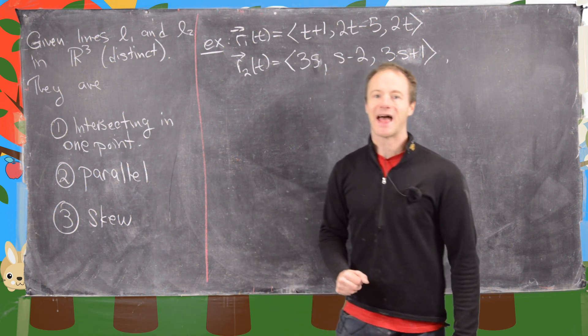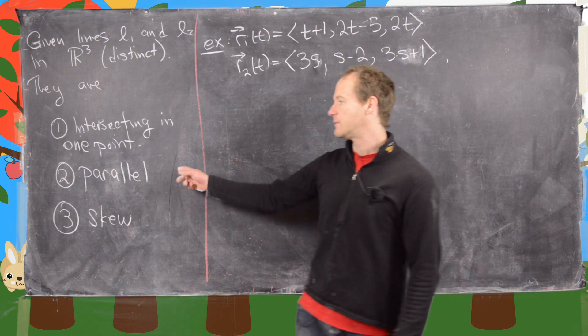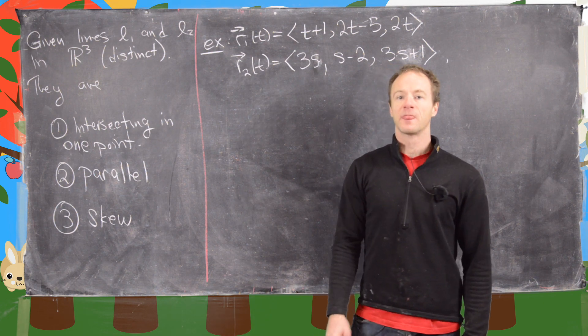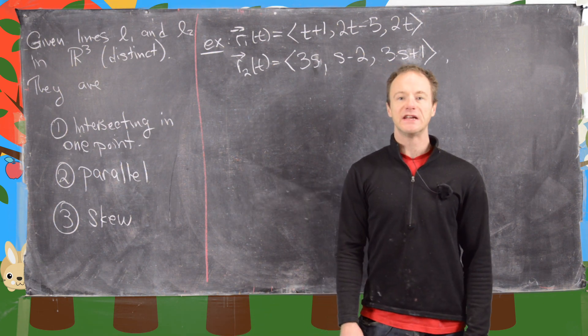They can intersect at a single point, they can be parallel, or they can be skew. So we're going to look at an example of each of these.